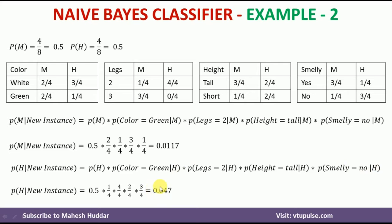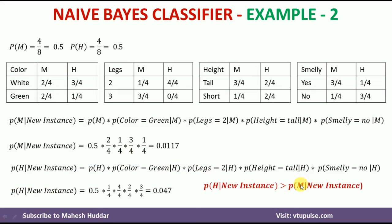Now we compare these two probabilities. The probability that the new instance is classified as H (0.047) is greater than the probability that it is classified as M (0.0117). Hence, the new instance is classified as species H. In this video, we understood how to calculate the prior probabilities, how to calculate the conditional probabilities, and how to use them to classify a new instance into one of the given categories.